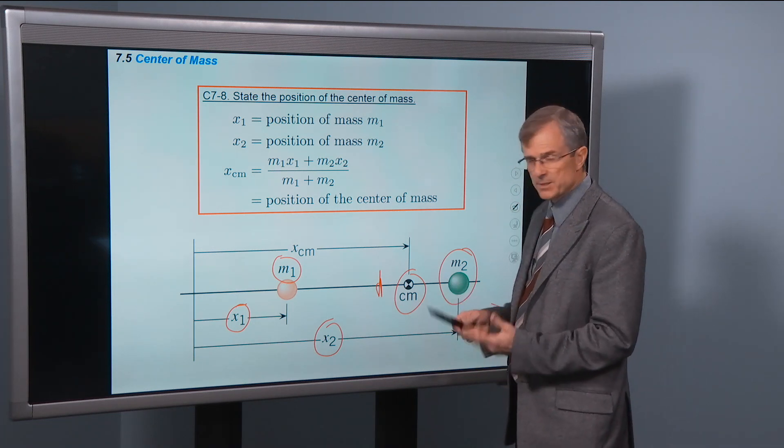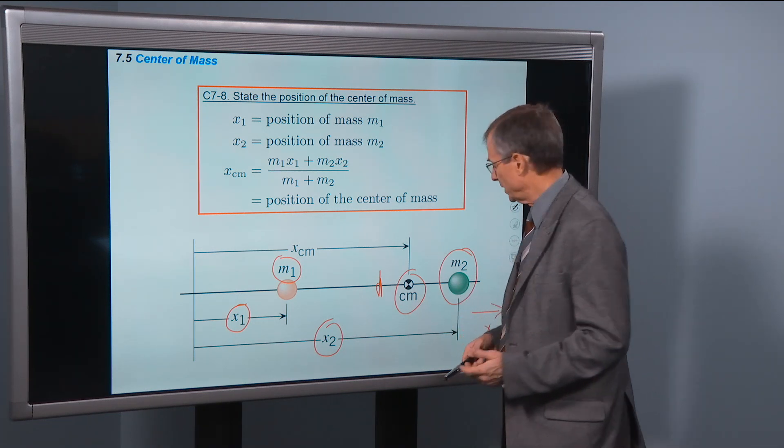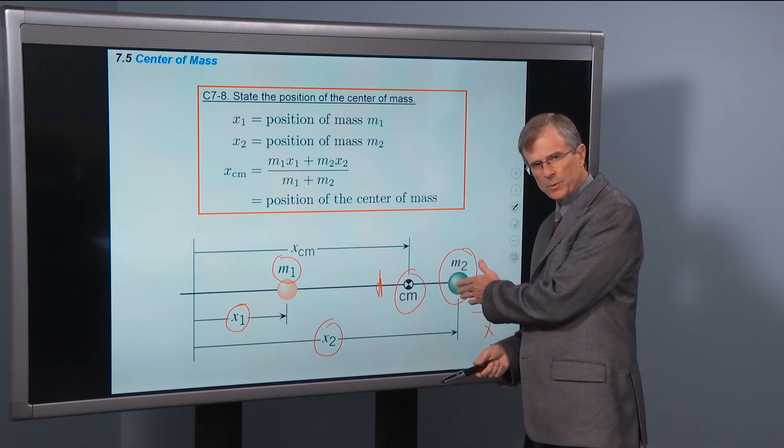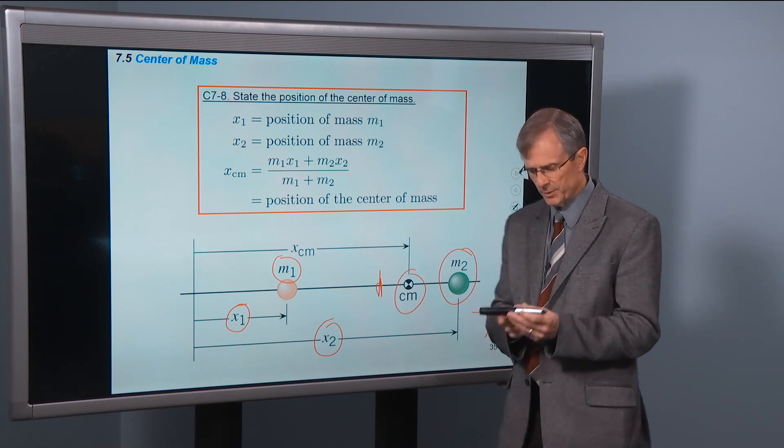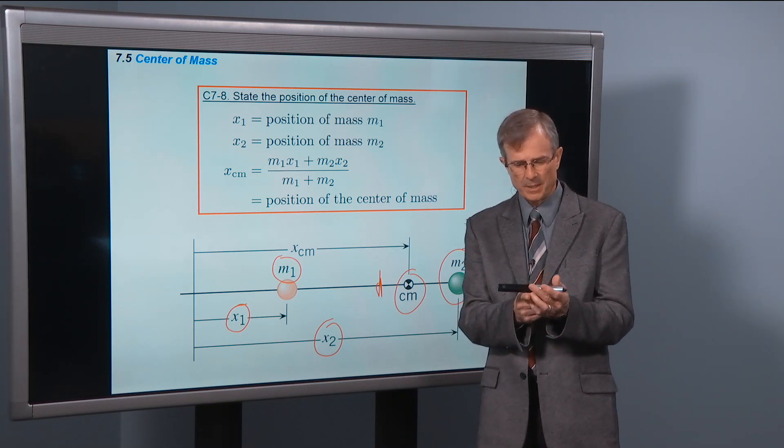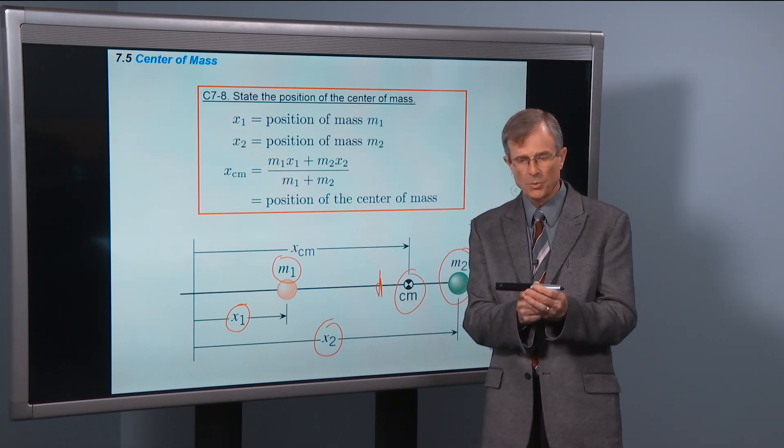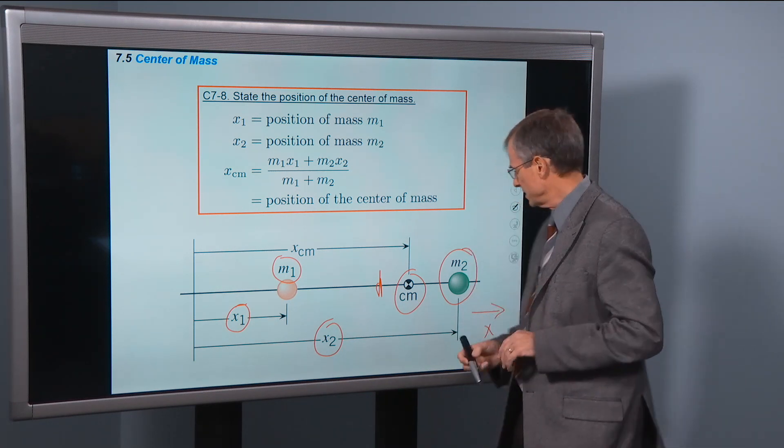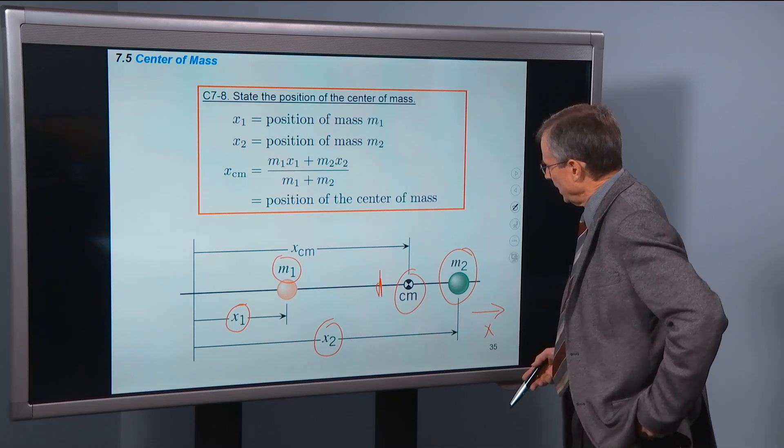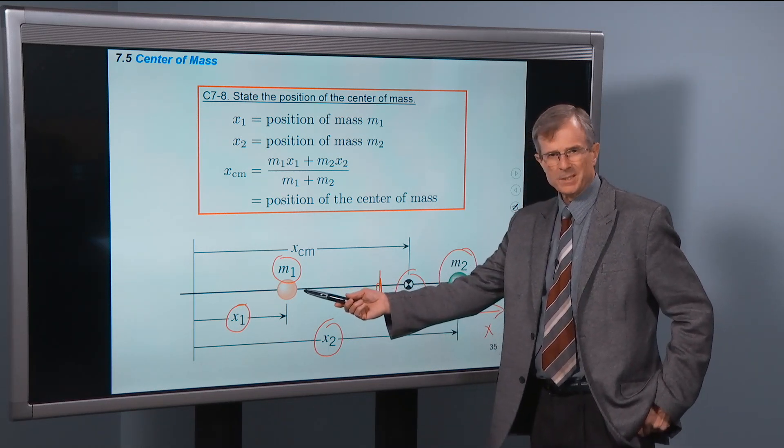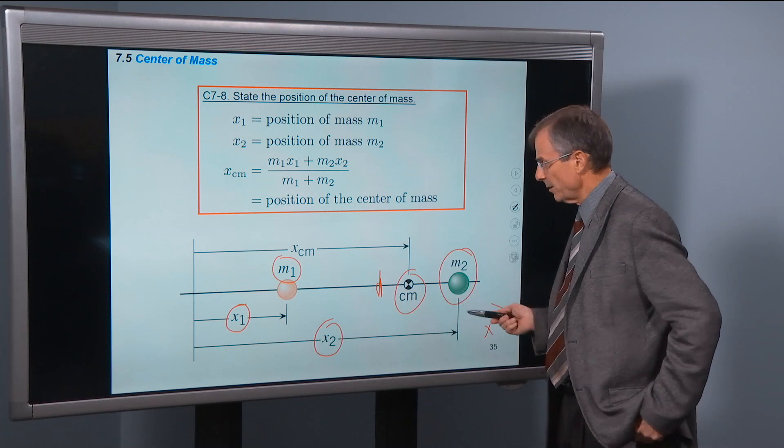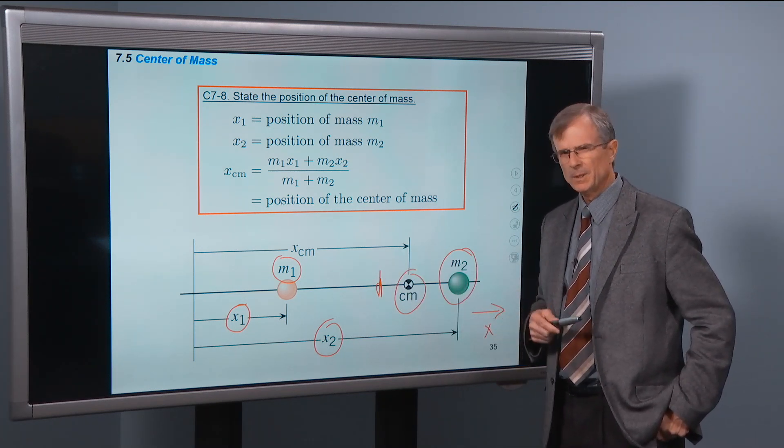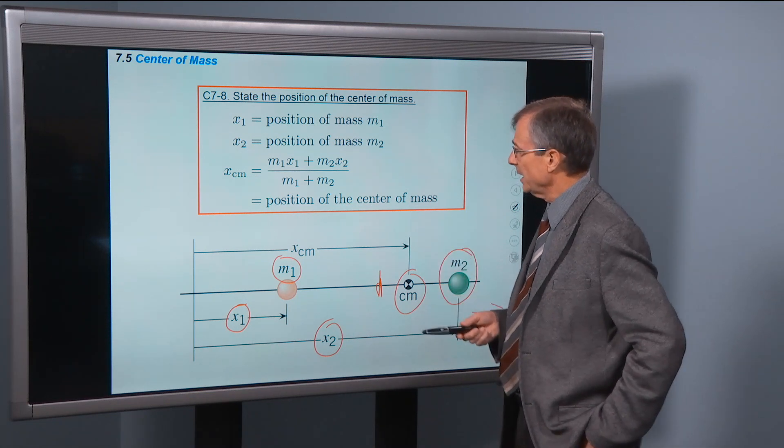But what if one of the masses is heavier than the other one, say m-two? Then you might say that would shift the center of mass over toward mass two. For example, this pen doesn't balance quite in the middle because it's a little heavier on this end than on this end. In the extreme limit that mass one has zero mass, then the center of mass of the two will be right smack in the middle of m-two. It all makes sense.